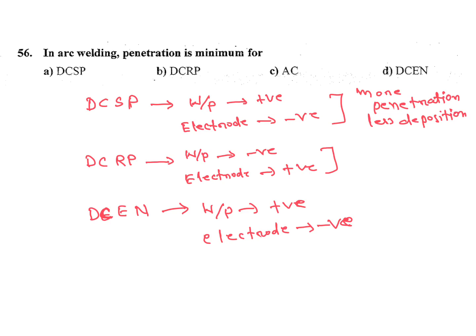In case of direct current reverse polarity, deposition is more, less penetration, more deposition. AC is in between these two.